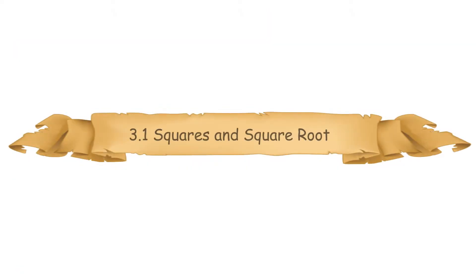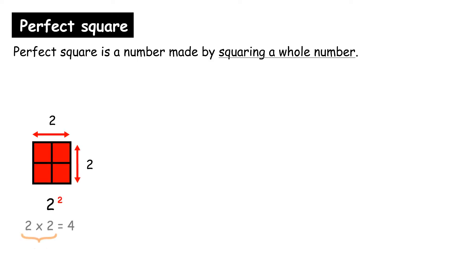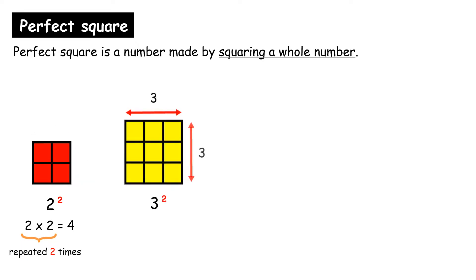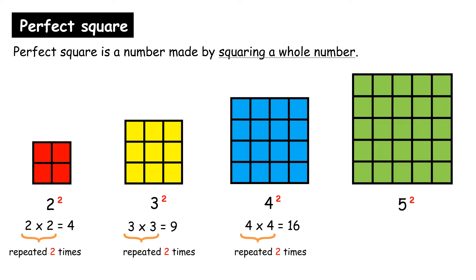3.1 Squares and Square Roots. A perfect square is a number made by squaring a whole number. For example, 2 squared is 2 multiplied by itself 2 times. 3 squared is 3 repeated multiply for 2 times. 4 squared is 4 repeated multiply for 2 times. 5 squared is 5 repeated multiply for 2 times.